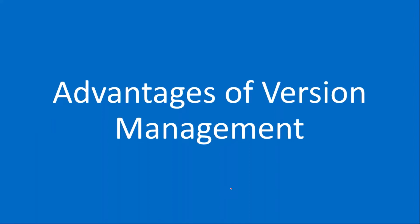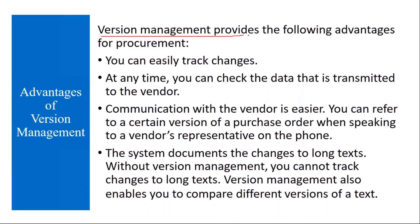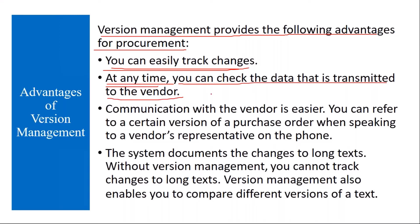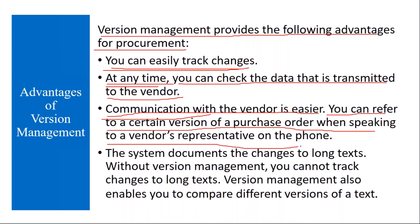Version management provides the following advantages for procurement. First, you can easily track changes. At any time, you can check the data that was transmitted to the vendor. Once you create a purchase order, you can track what data was sent to the vendor. Communication with the vendor is also easier — the moment you make a change, you can trigger an output to the vendor. You can also refer to a specific version of a purchase order when speaking to a vendor's representative on the phone.